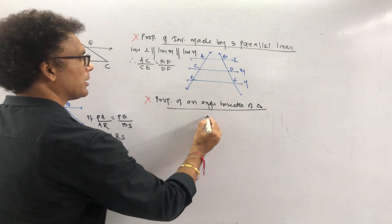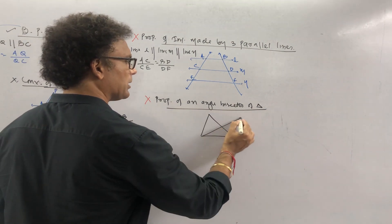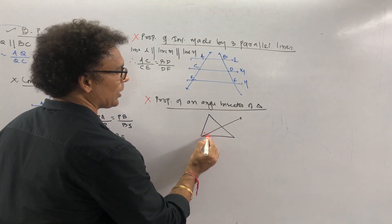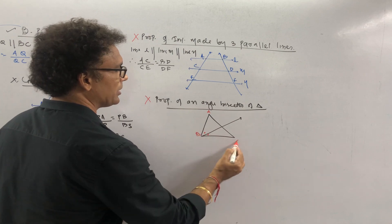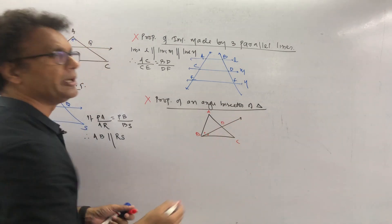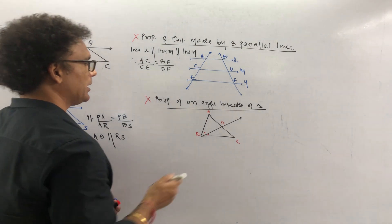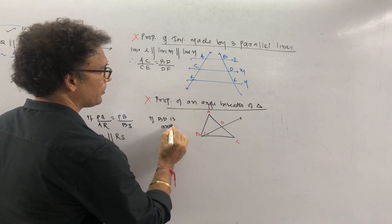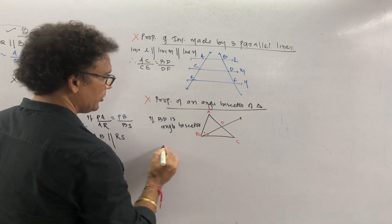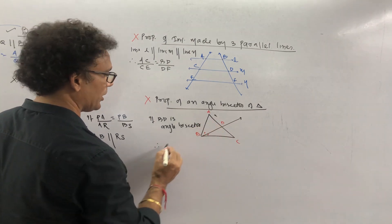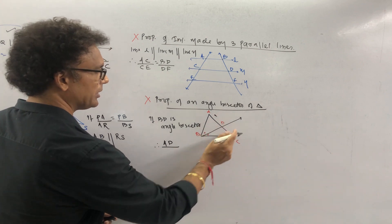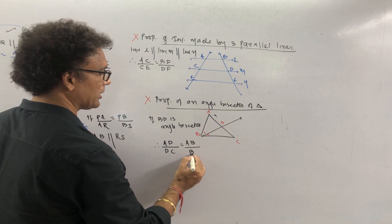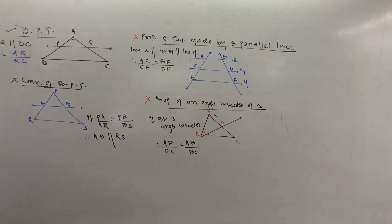The property of an angle bisector — previously this was very important and one sum used to come from it. In triangle ABC, if BD is your angle bisector, then the property is: AD upon DC is equal to AB upon BC. You cannot change the sequence. This is your property of an angle bisector of a triangle.